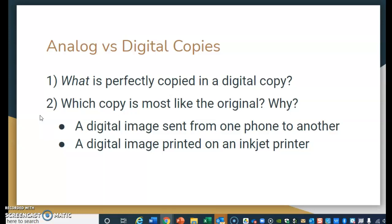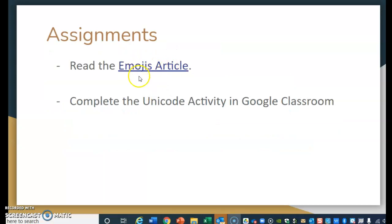A digital image, for example, would be sent from one phone to another — that image is stored in memory and could be sent again without degrading over time. A digital image can also be printed on an inkjet printer because your printer is getting an exact copy of what the image is, versus a photocopy machine where it's scanning the document but not actually making a perfect digital copy. So what you need to do is read the emojis article and complete the Unicode activity in Schoology.